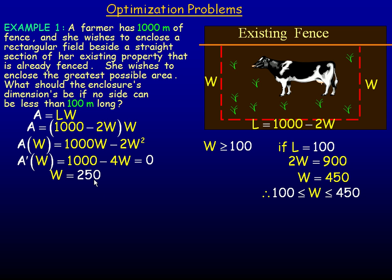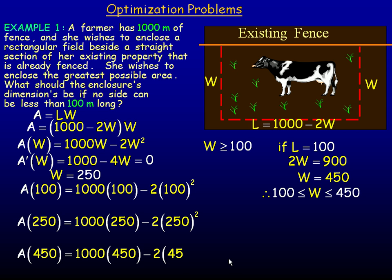So that's a possible extrema point. So let's find the area for 100, the area for 250, and the area for 450. And these will be the three calculations.